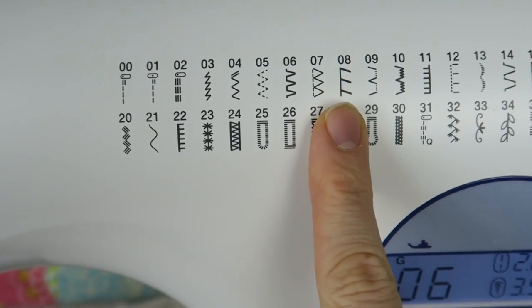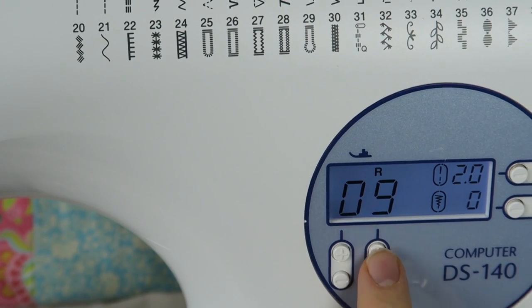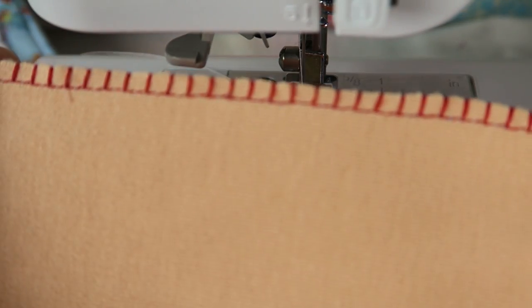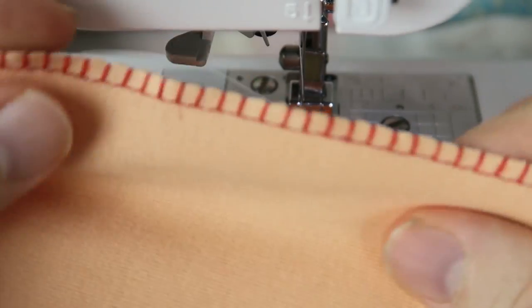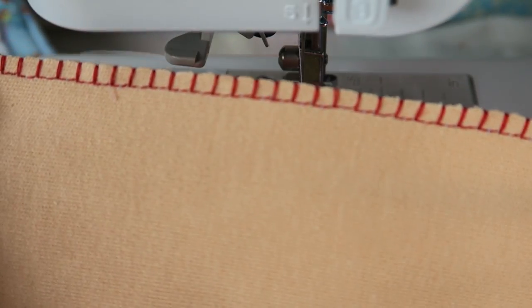And then there's also another overcasting stitch on my sewing machine which is used for stretch fabrics, and I already prepared this in another video. This is what this stitch looks like.